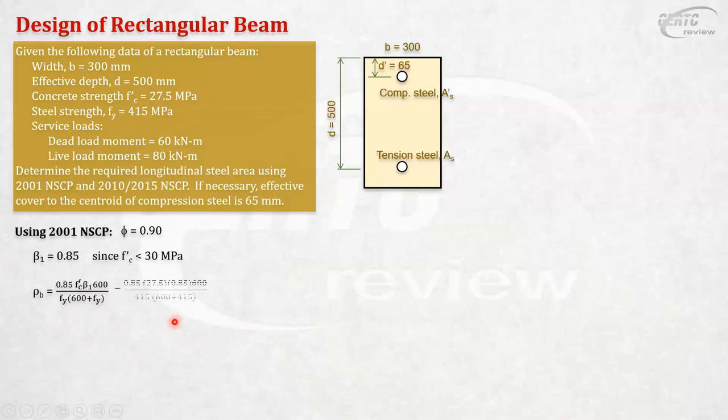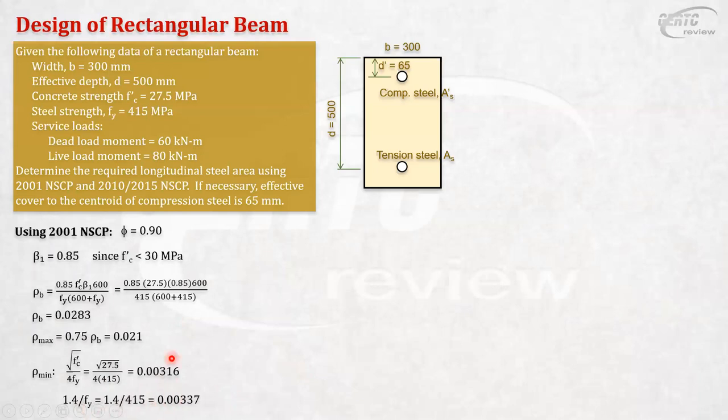Because that's 200,000 times 0.003. For your information. So, we can get the rho balance, 0.0283. Then, the rho max, okay, that's necessary in the design of beam in 2001. 0.021 is our rho max. Okay. The rho min, we check. There are two rho min values. The code says the rho min is computed using this formula, which turns out to be that, but it shall not be less than this formula. Okay. It shall not be less than. If you noticed, this 1.4 is bigger. So, we will use this value for our rho min.